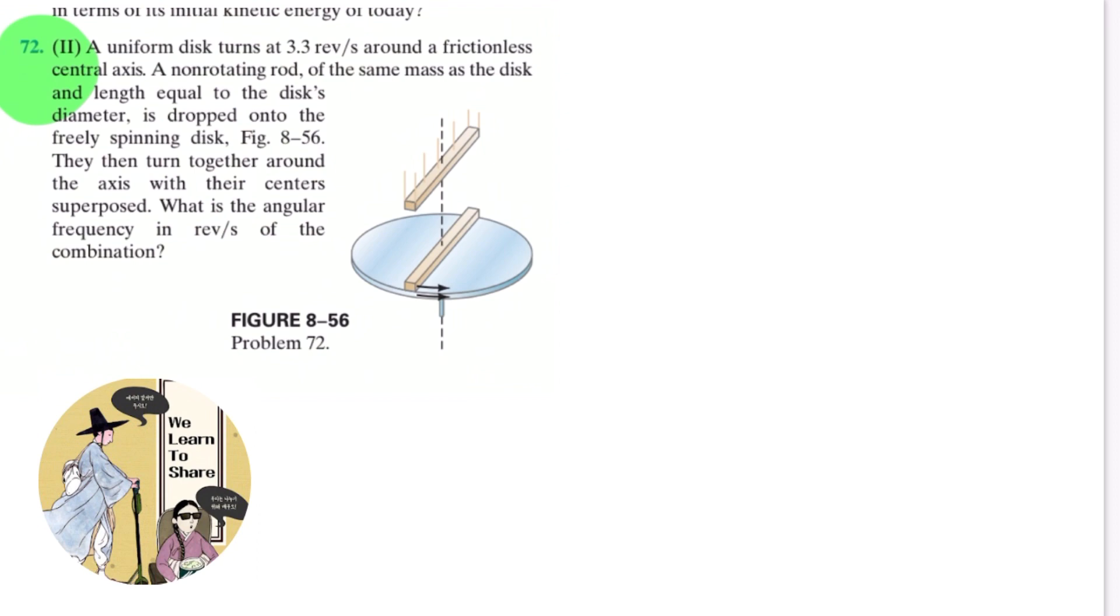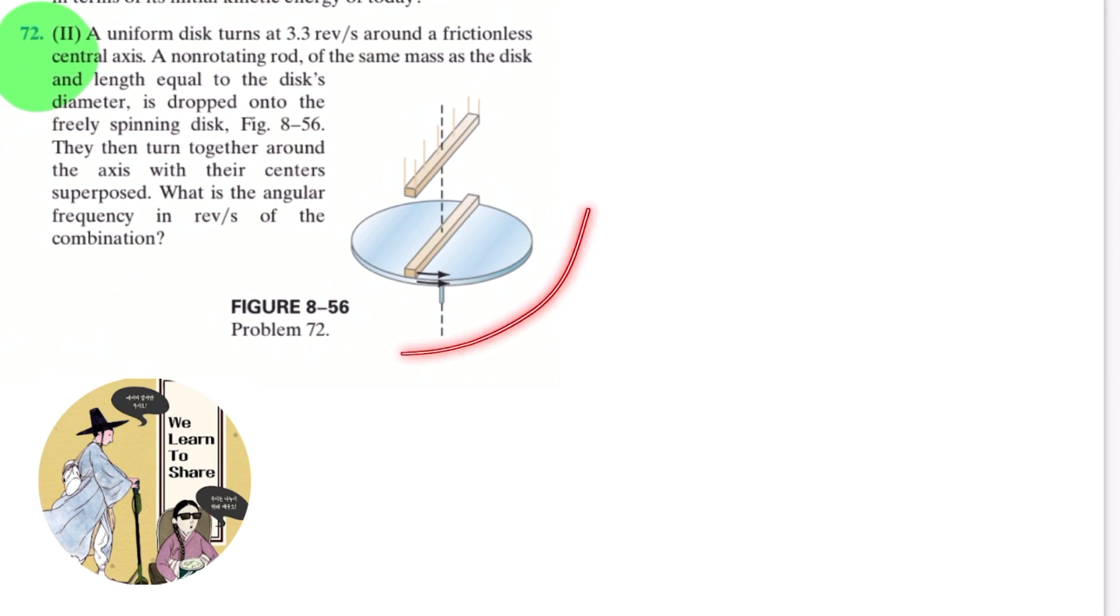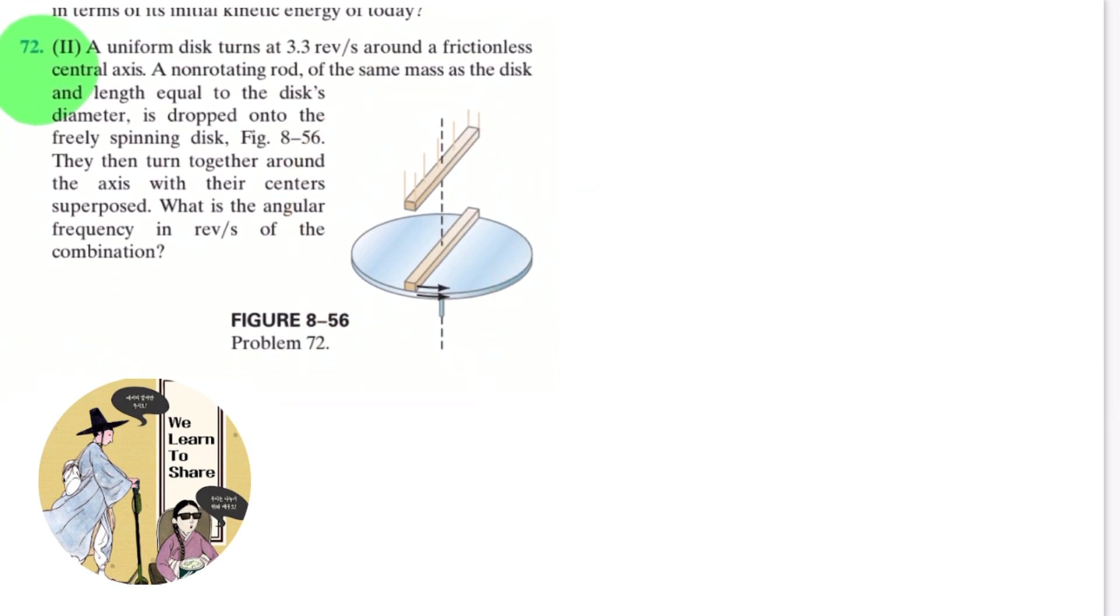So let's read the question. A uniform disc turns at 3.3 rpm around the left-hand central axis. A non-rotating rod of the same mass as the disc in length equal to the disc's diameter is dropped onto the freely spinning disc, like the figure 8-56 over here. Then they turn together around the axis with their centers superposed. What is the angular frequency in revolutions per second of the combination?